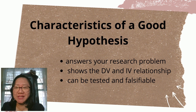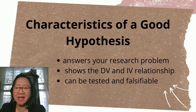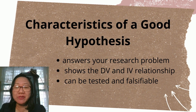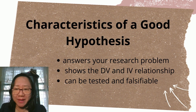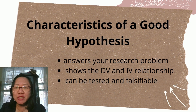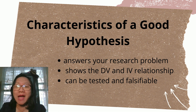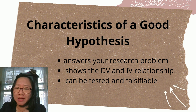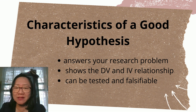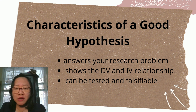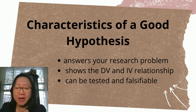What are the characteristics of a good hypothesis? A good hypothesis answers your research problem. It shows the relationship of the dependent variable (DV) and the independent variable (IV). It can be tested and falsifiable, which means your hypothesis can be proven true or false — you can negate or affirm it.